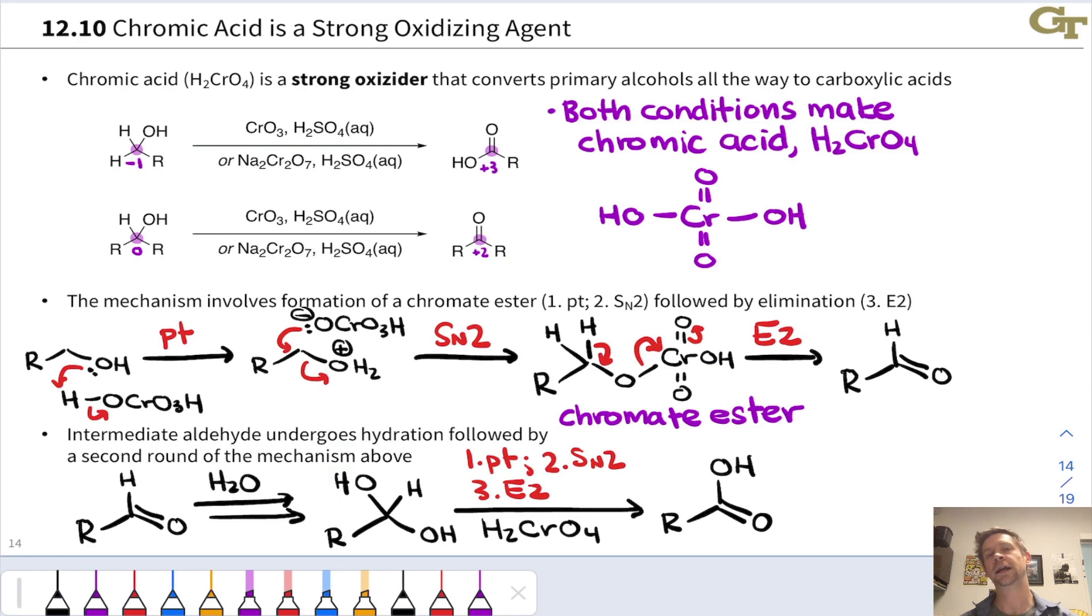Jones conditions are so vigorous that you can't stop at the aldehyde stage. It undergoes very rapid hydration and further oxidation to the carboxylic acid. So the final product we get out of these Jones oxidation conditions is the carboxylic acid starting from a primary alcohol. We start from a secondary alcohol as shown in the second example, we end at a ketone.